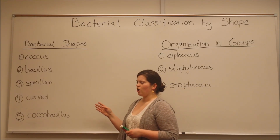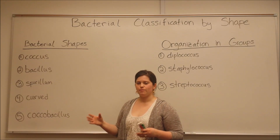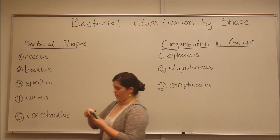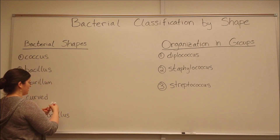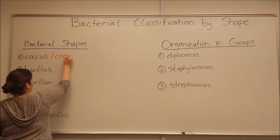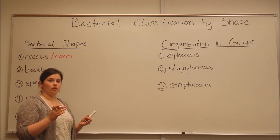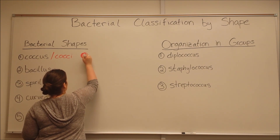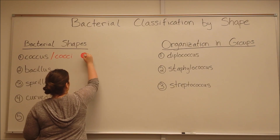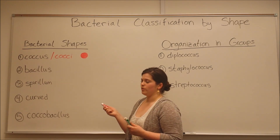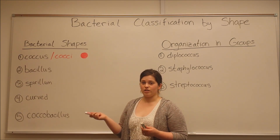There are several different shapes that bacterial cells can take. These include a coccus shape — the plural of that is cocci. These are spherical bacteria. An example of a coccus type bacteria would be Staphylococcus aureus.